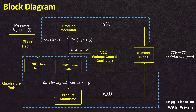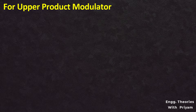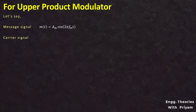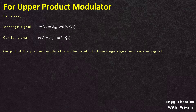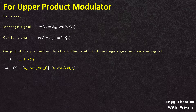Now let's see the mathematical analysis for the phase discrimination method. For the upper product modulator in the in-phase path, the message signal is m(t) = AM·cos(2π·fM·t) and the carrier signal is c(t) = AC·cos(2π·fC·t). The output V1(t) is the product of these two signals: V1(t) = m(t)·c(t) = AM·cos(2π·fM·t) × AC·cos(2π·fC·t) = AM·AC·cos(2π·fM·t)·cos(2π·fC·t).